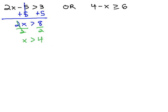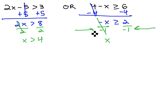The other inequality, 4 minus x is greater than or equal to 6. We can solve by subtracting 4 from both sides, giving us negative x is greater than or equal to 2. And finally, dividing both sides by negative 1. Be careful as we do this, because we've divided by a negative, we need to flip the inequality symbol, giving us x is less than or equal to negative 2.